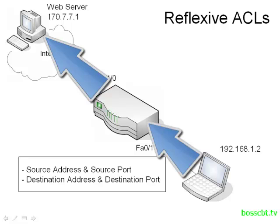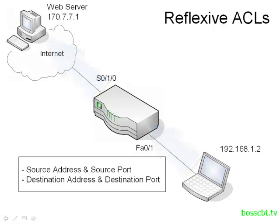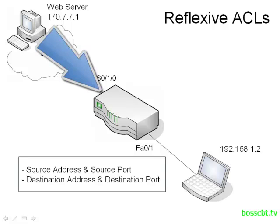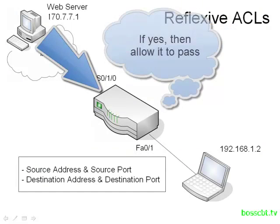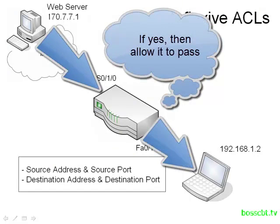This is the session info, and the router is going to update its access list with a permit statement based on this session information. What that means is when the web server returns traffic, the session information has to match. It's a way of validating that we're getting the traffic back from the right person that we originally contacted — in other words, that the correct web server is responding to us.